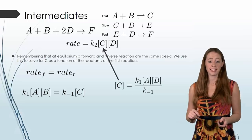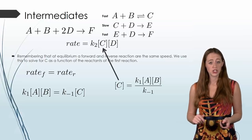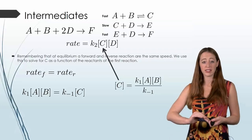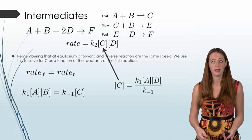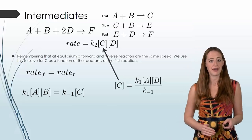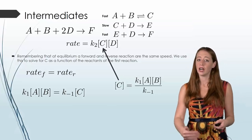Once we have this, we can fill it back in to our rate law that we actually want, right? Because our goal is to find that rate law of the slow step. It's just that we can't have C in there. Instead we need to have C in terms of other reactants.